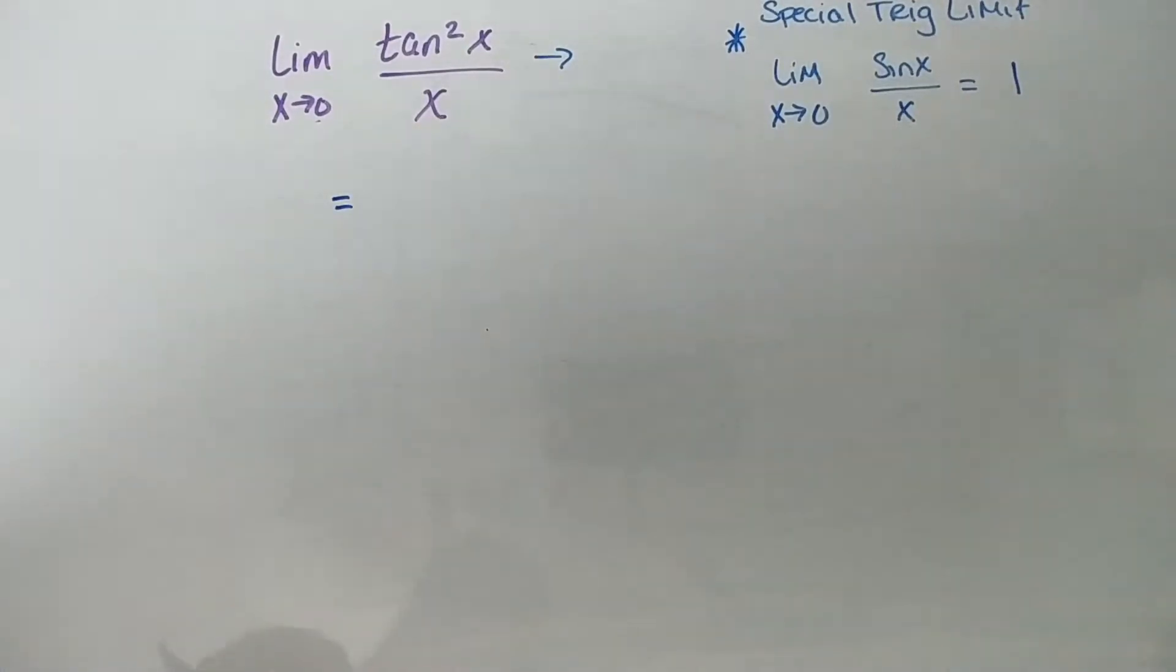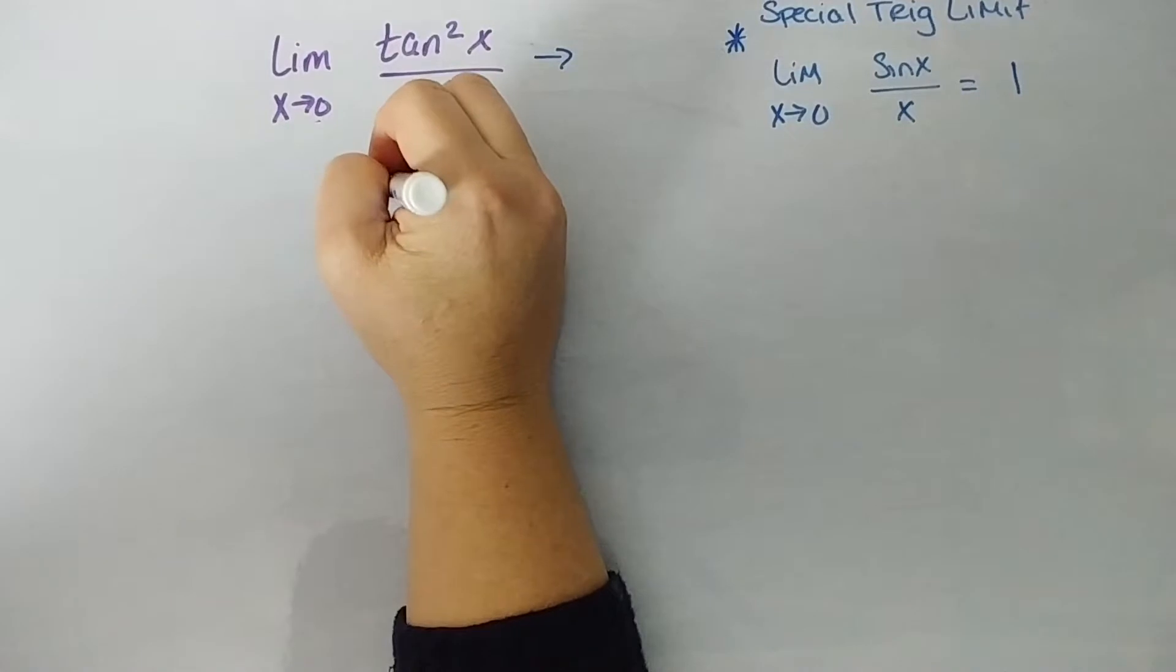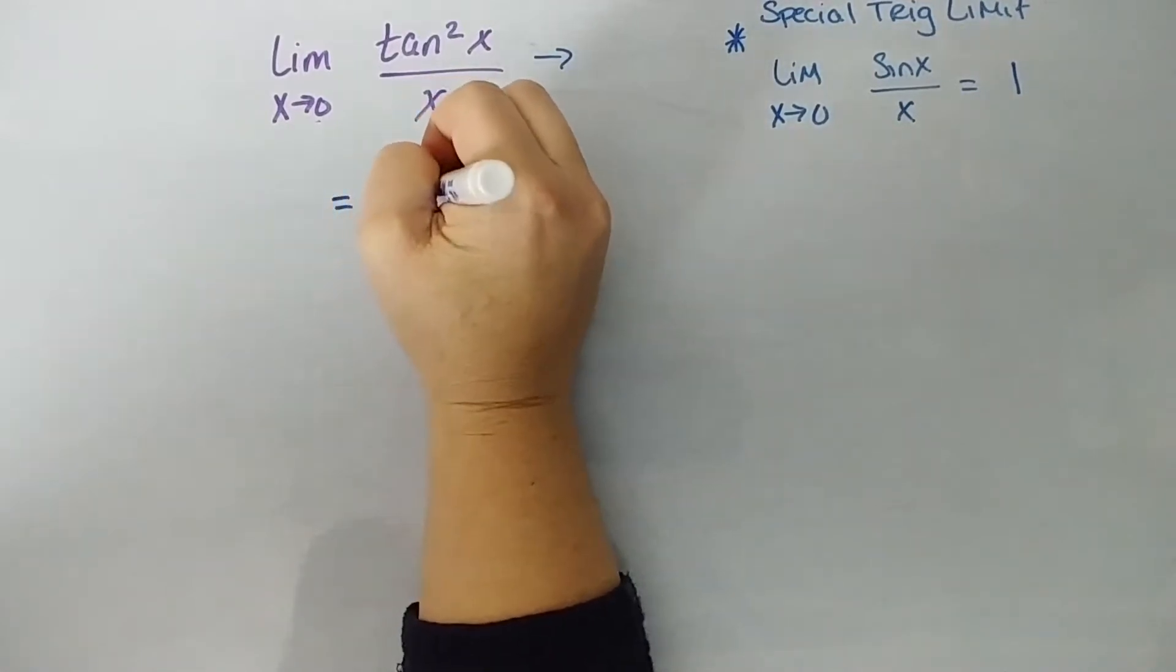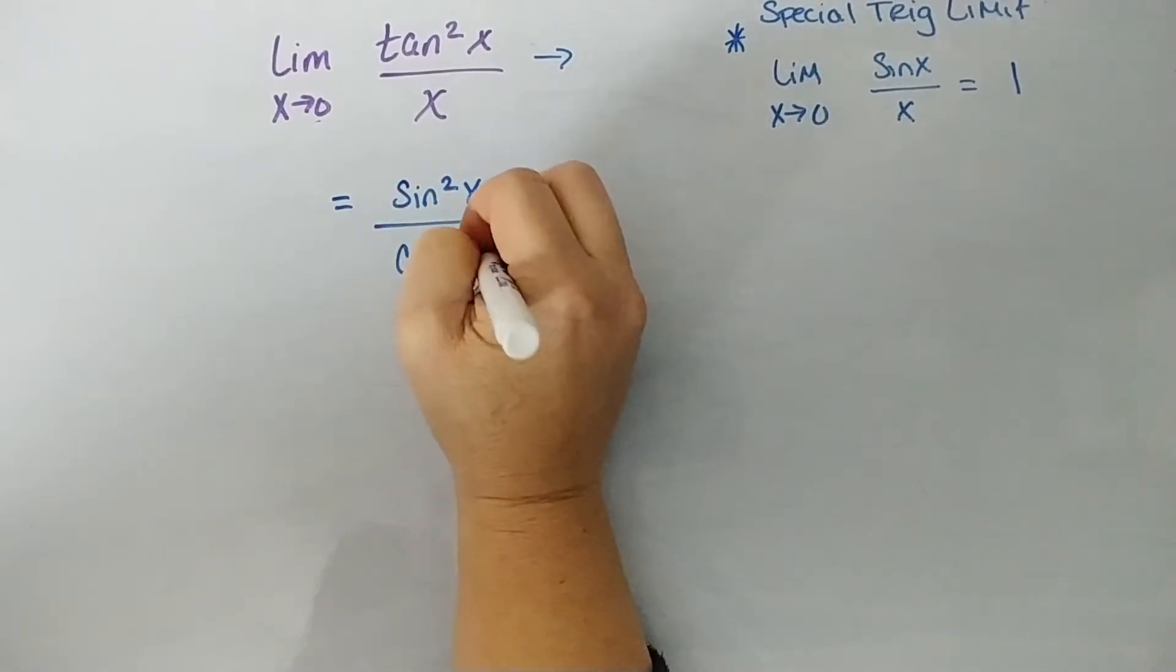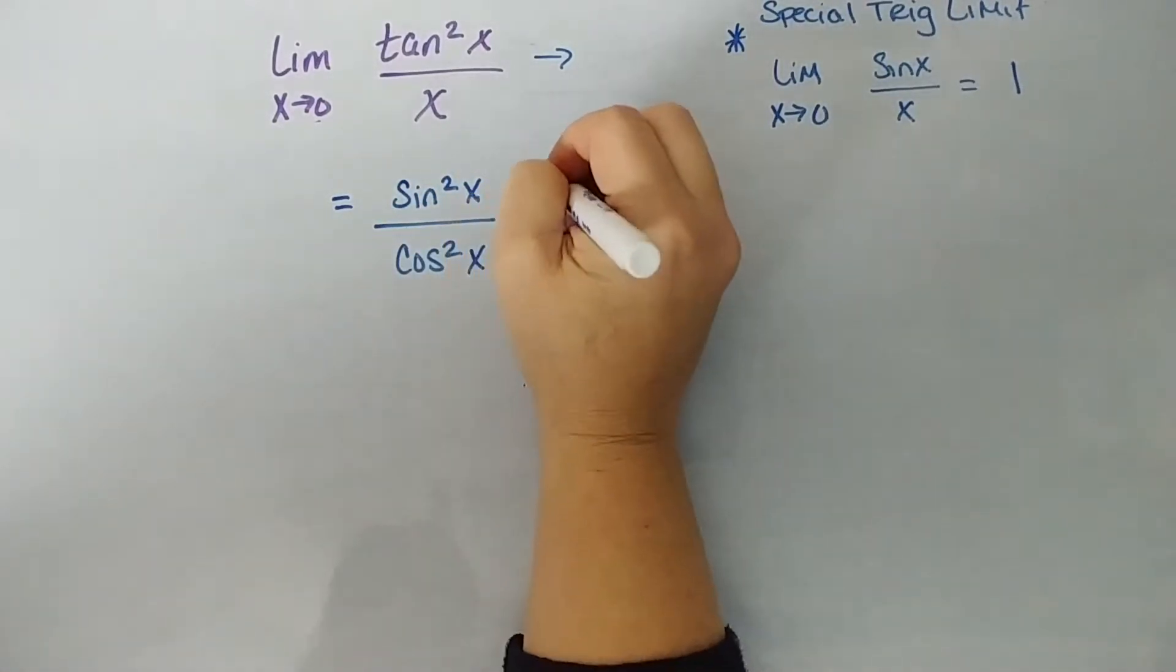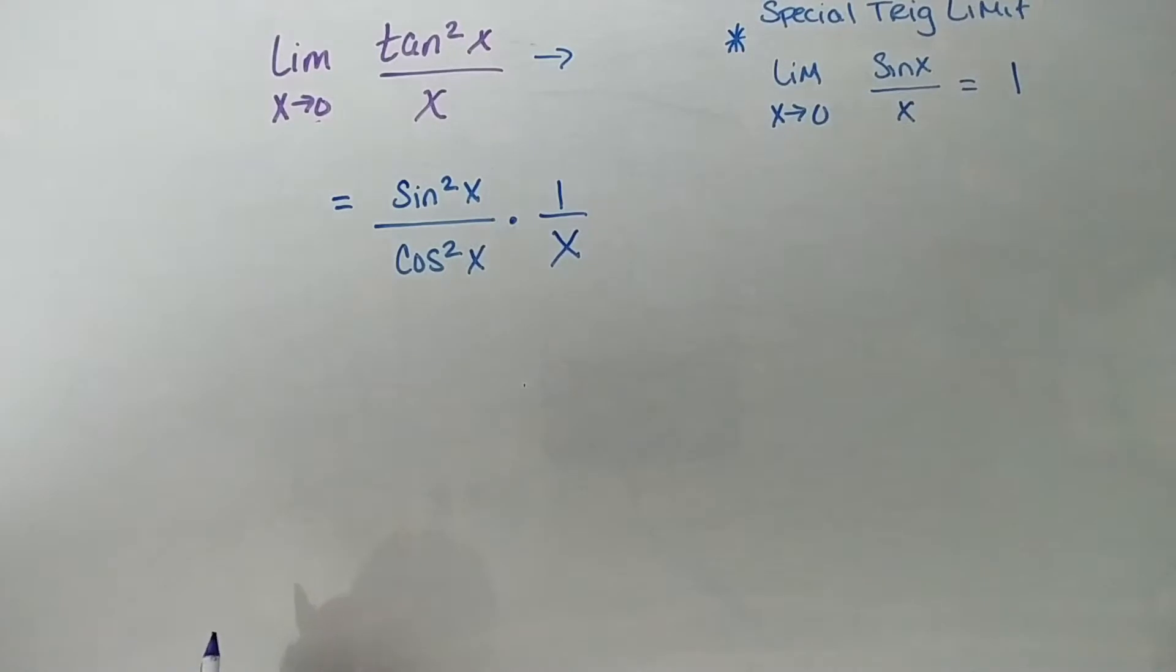Let's rewrite tangent squared as sine squared over cosine squared. So this is really sine squared of x all over cosine squared of x times 1 over x, okay? Basically, I rewrote this nicer. I could have said sine squared of x all over cosine squared of x, and then instead of divide, multiply by 1 over x, but I just did it in one step. So there we go, okay?